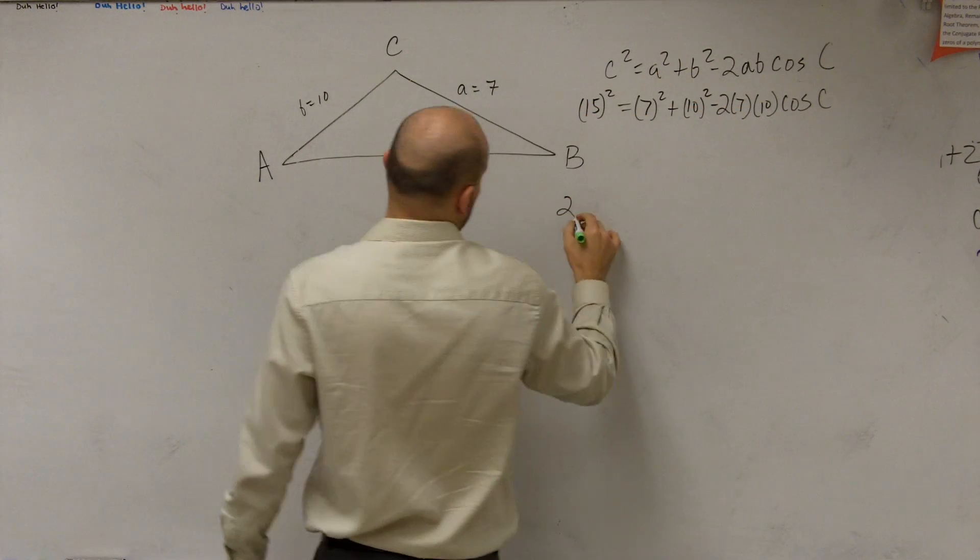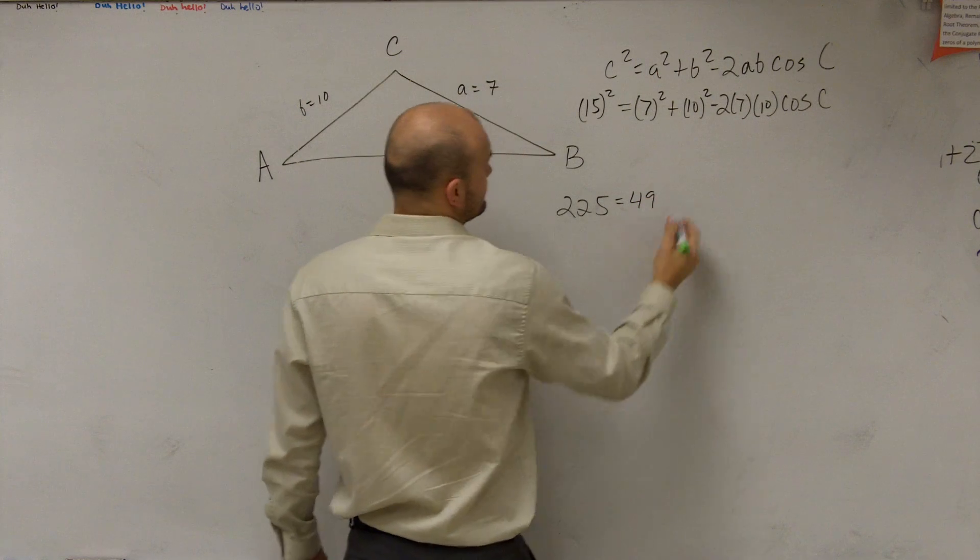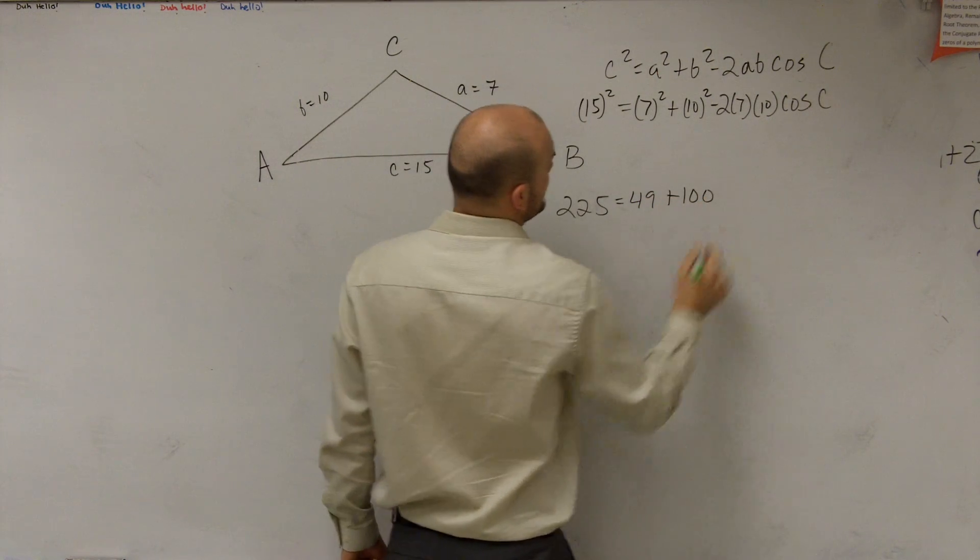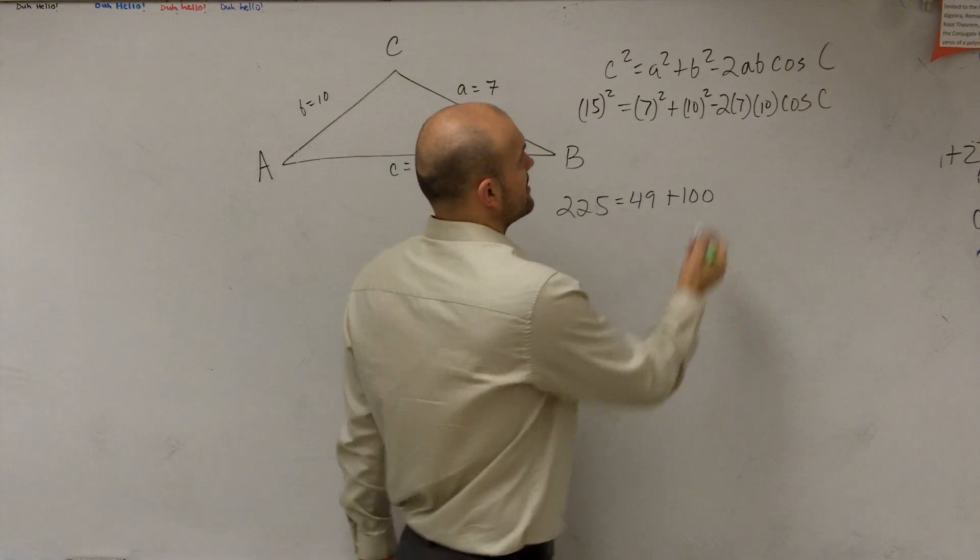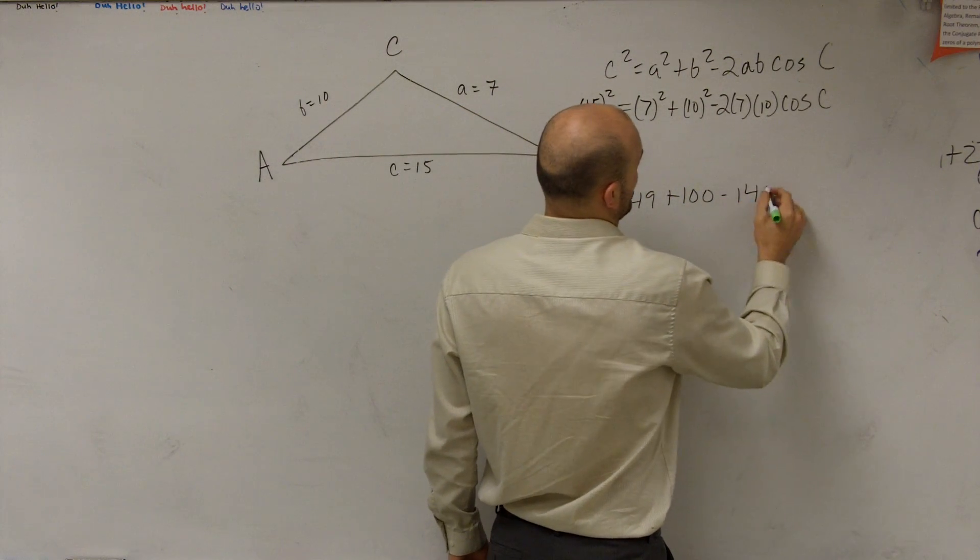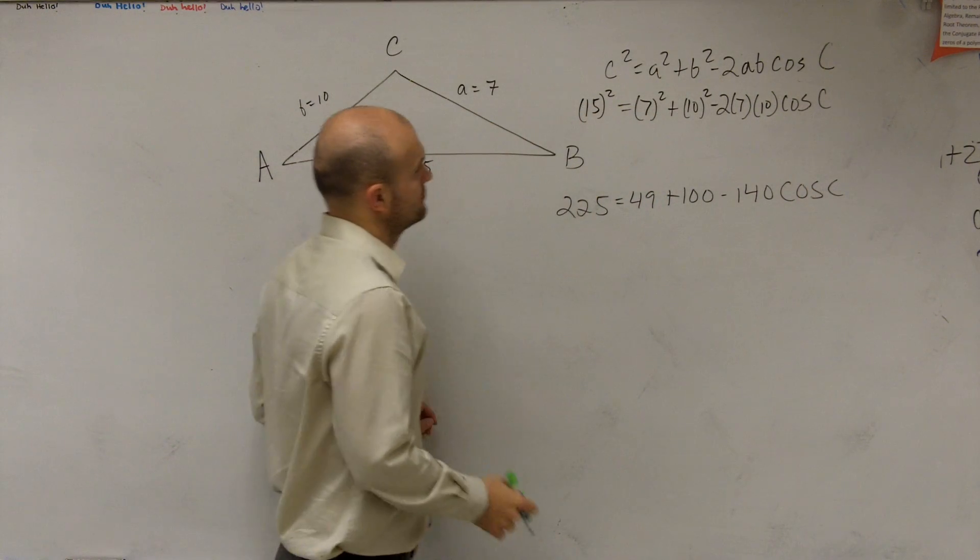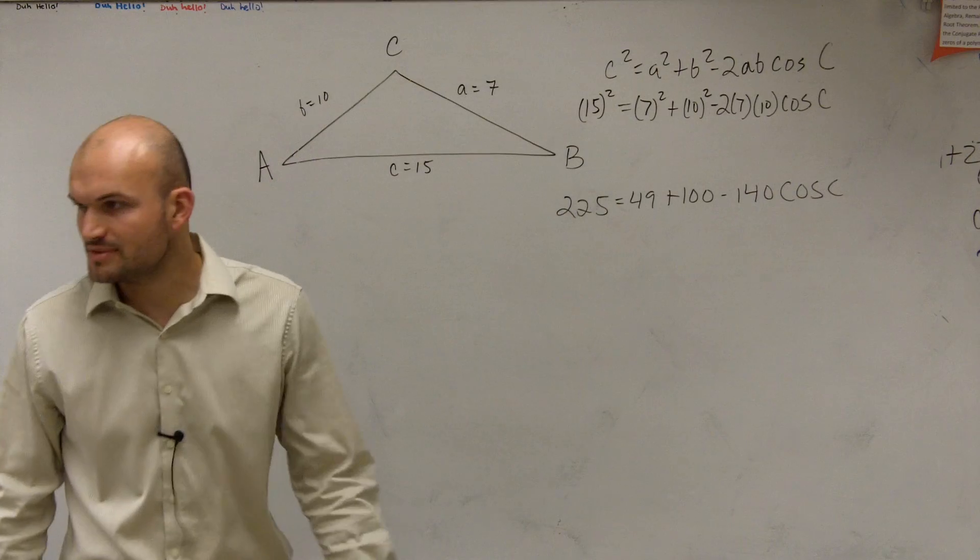So 15 squared is going to be 225 equals 49 plus 100. And then we have 2 times 7, which is 14 times 10 is going to be negative 140 cosine of c. Does everybody follow me so far?